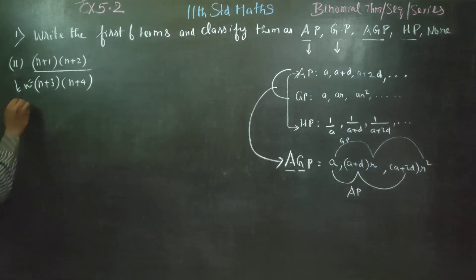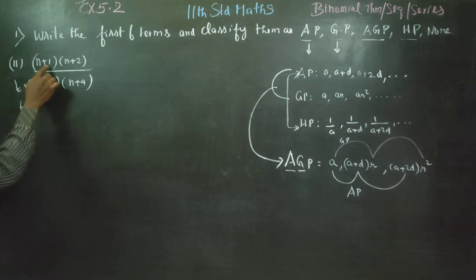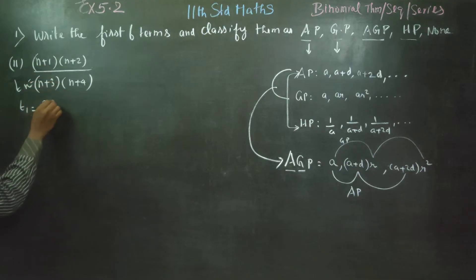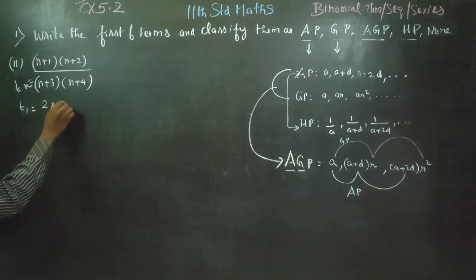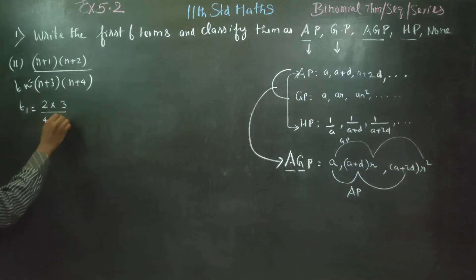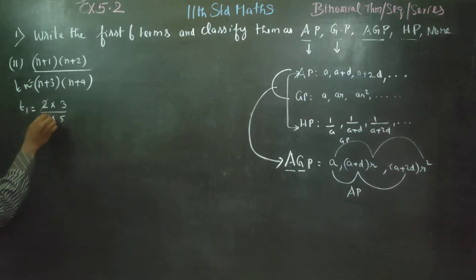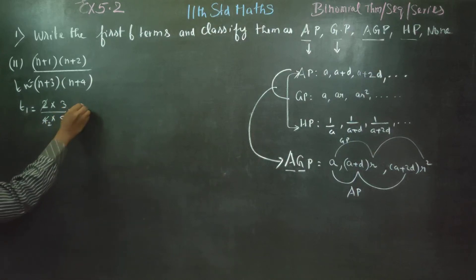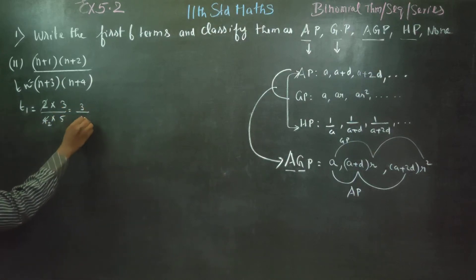We will start with t1. Substituting n=1: (1+1)(1+2)(1+3)(1+4) = 2 × 3 × 4 × 5. Cancel the 2 tables — your answer for t1 will be 3 by 10.